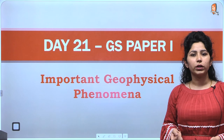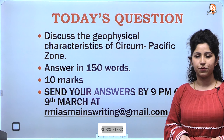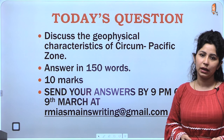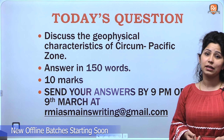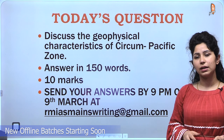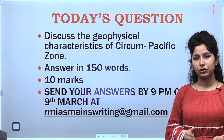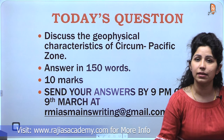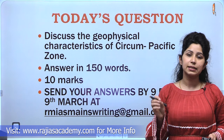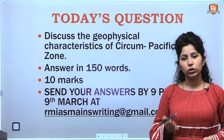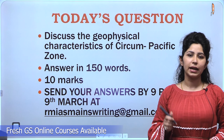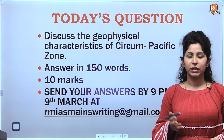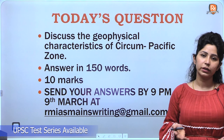The question is: discuss the geophysical characteristics of the Circumpacific Zone. Answer in 150 words for 10 marks. Send your answers for this question by 9 PM tomorrow. The Circumpacific Zone is also known as the Ring of Fire, Pacific Ring of Fire or the Pacific Rim. Since this is only a 150-word answer, you will have to keep things very concise and to the point. Since it's a geography question, see if you can add any maps or diagrams because that is how you will get more marks in geography.